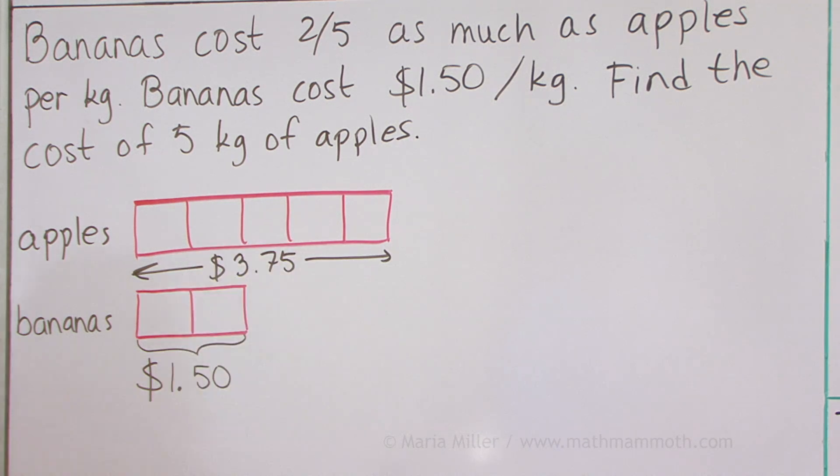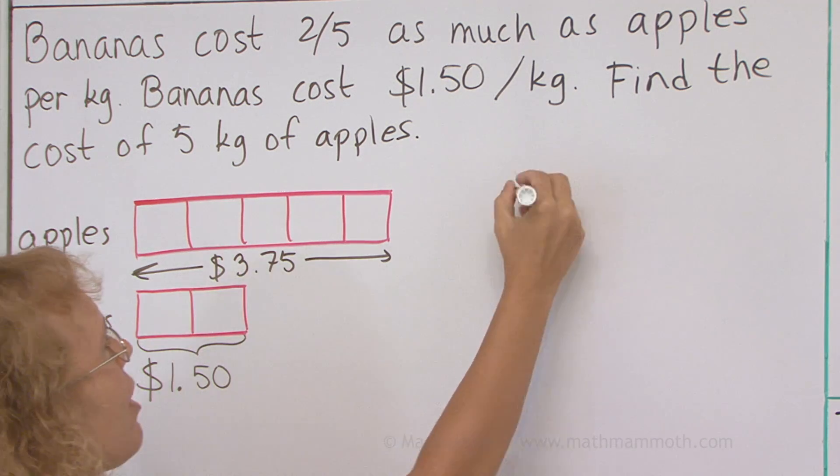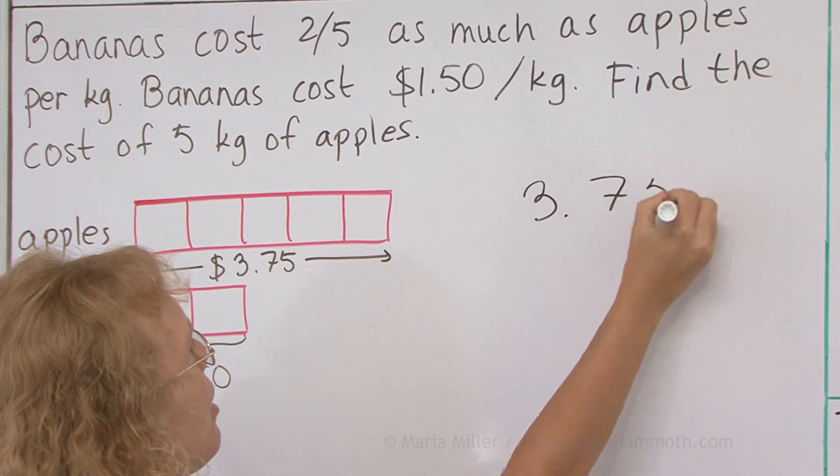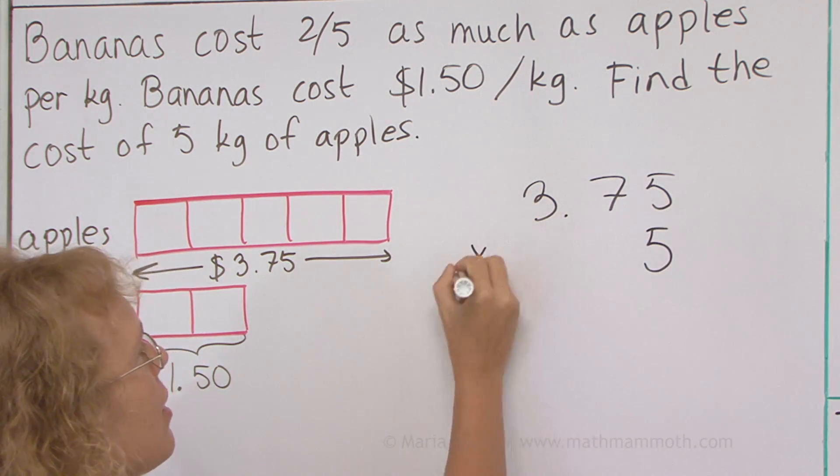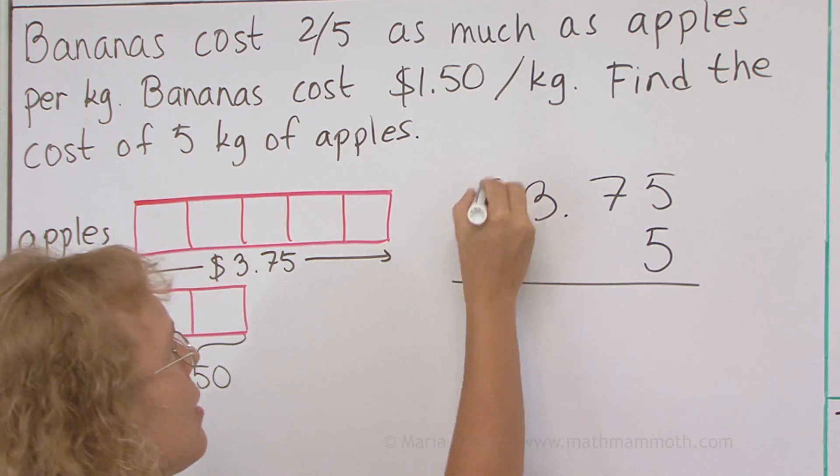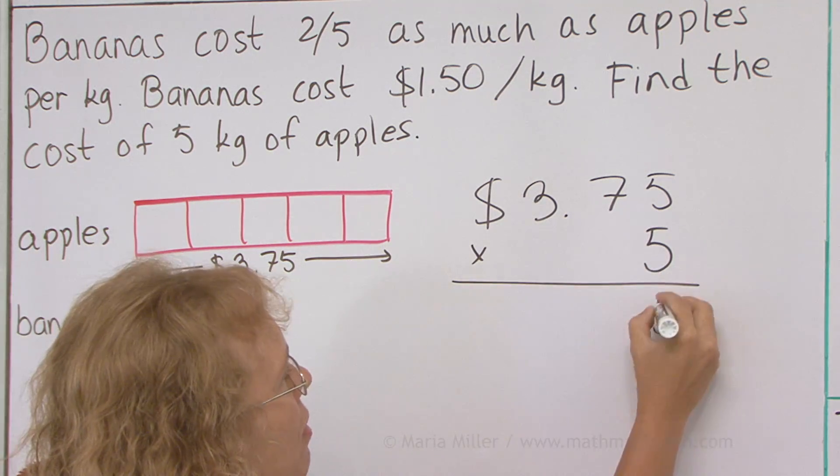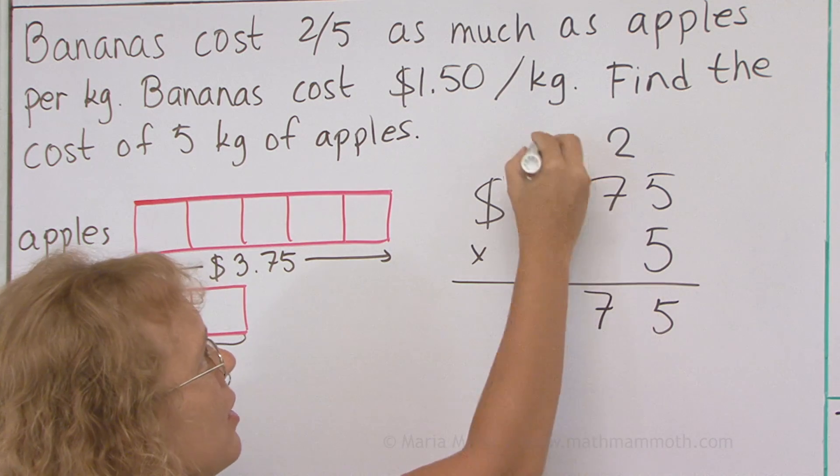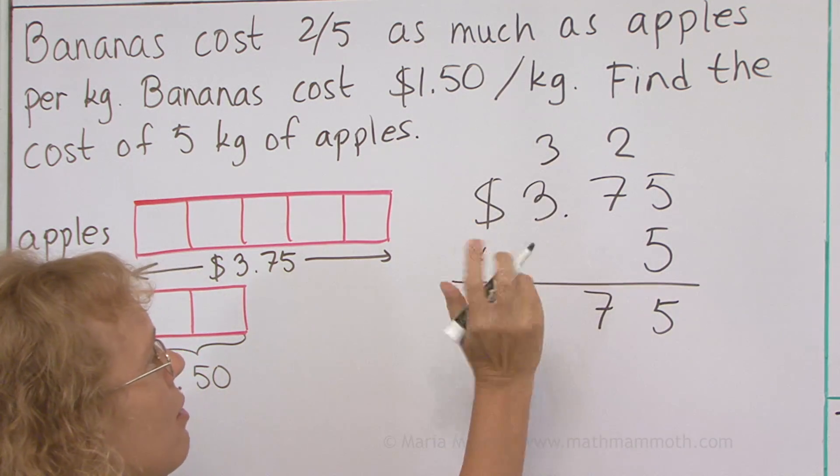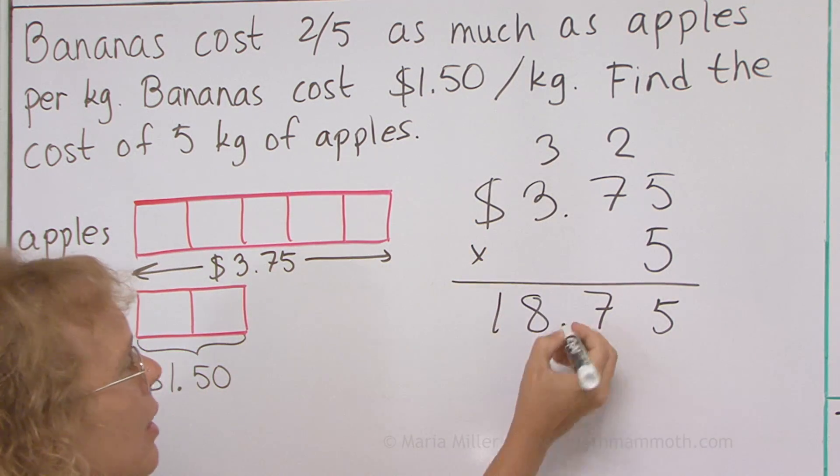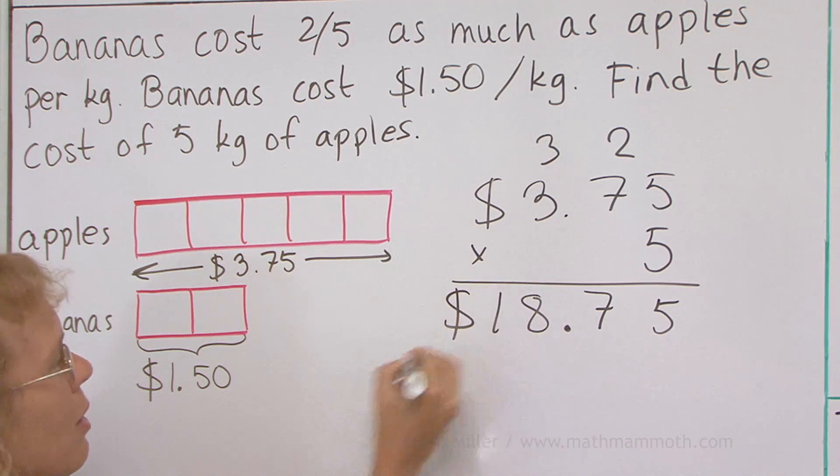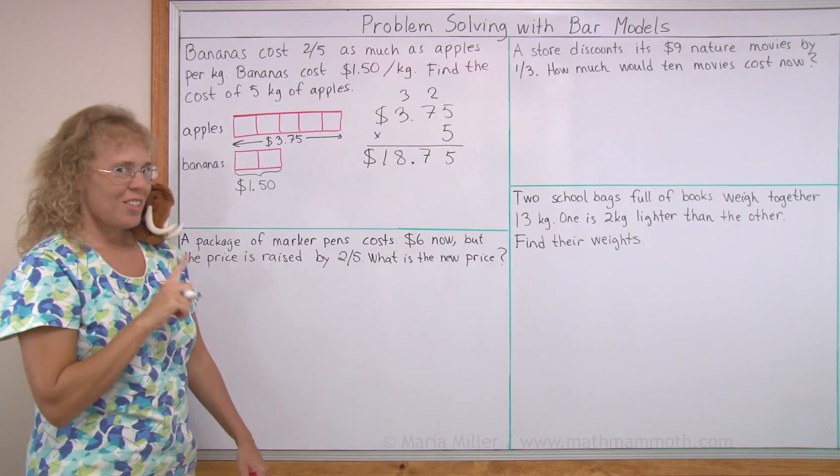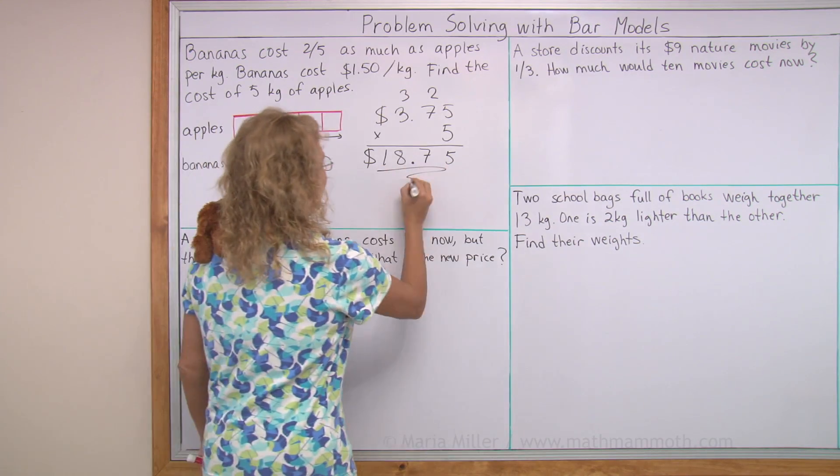What I solved here is for one kilogram. So for five kilograms, of course, I need to multiply, right? Five times five, and then there's 35 plus 2, 37, and here's 15 plus 3 is 18. And then my decimal point, dollar sign. So that's my answer, $18.75.